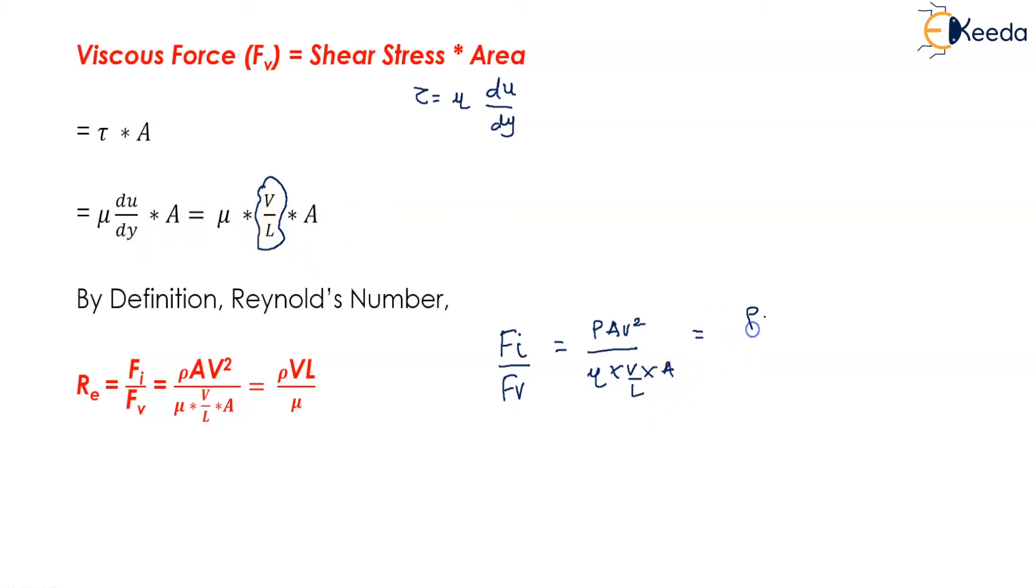So now this becomes ρ into v into L divided by μ. But we also know μ upon ρ is nothing but ν which is also known as kinematic viscosity. So now this becomes v multiplied by L upon ν.